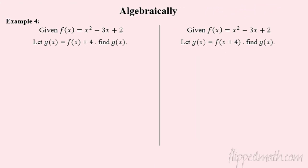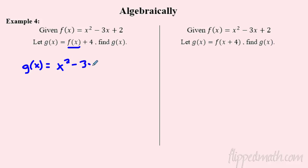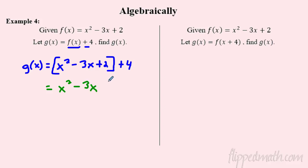Now let's get to the algebra. If f(x) = x² − 3x + 2 and I create g(x) = f(x) + 4, I put f(x) in brackets and add 4 to it. That gives me x² − 3x + 2 + 4, which simplifies to x² − 3x + 6. So we've created a new function after the vertical translation.